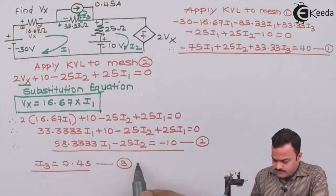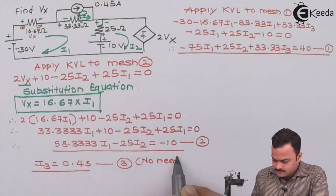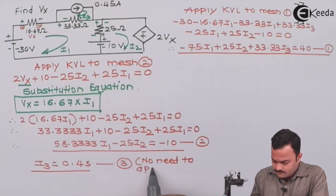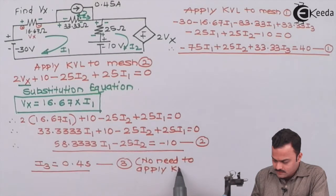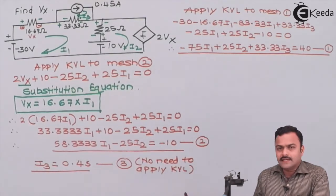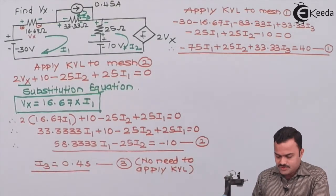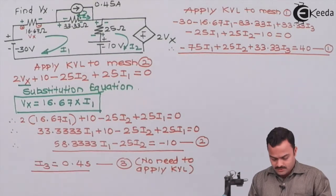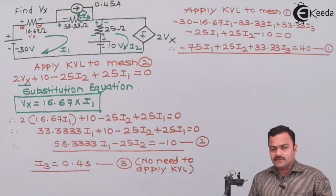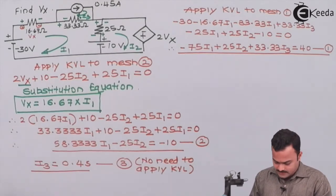So over here no need to apply KVL because current source is there in the mesh which will decide this mesh current. So if you solve these three equations we will get i1, i2, i3.